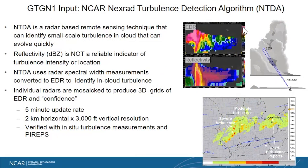The next input is radar information. We have an algorithm called the NTDA — the Nexrad Turbulence Detection Algorithm — which makes use of radar information, specifically the spectrum width measurements of Doppler radars. These represent the variability of radial velocities inside clouds and are linked to turbulence. NTDA converts these spectrum width radar measurements into eddy dissipation rate, and also combines the EDR estimates from all the different NEXRAD radars into one CONUS composite, which is input into GDGN.